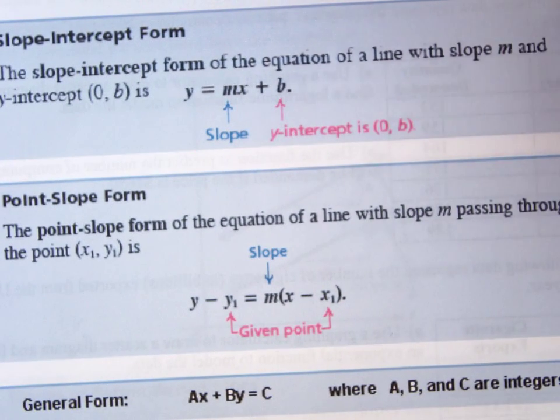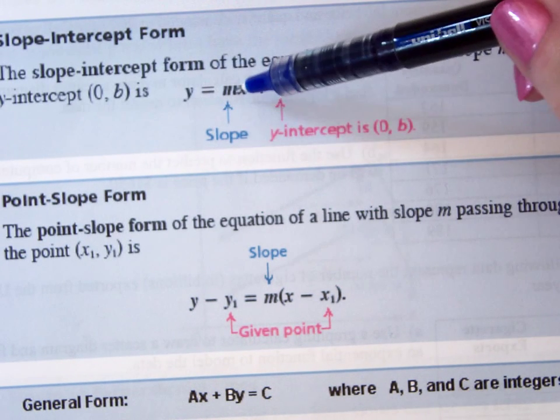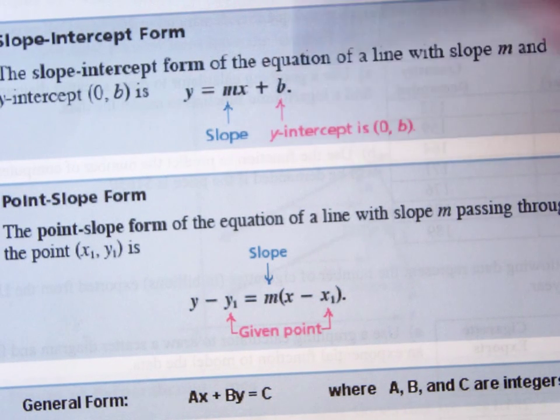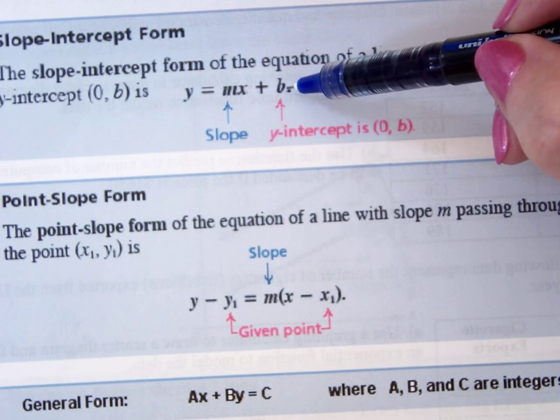There are several forms for the equation of the line. One is the slope-intercept form, where you have y equals mx plus b, where m is the slope of the line, and b is the y-intercept.